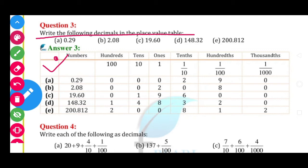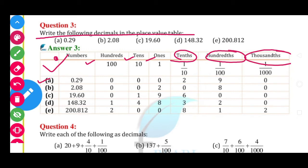Pehle to aapko box banana hai: 100s, 10s, 1s, then 10ths, 100ths, 1000ths — box banana hai aapko pehle. Phir A mein 0.29: 0 ones place mein, point ke peeche wala number 10th place mein hoga — so 2 in 10th place, phir 9 in 100th place. So 0 in ones, 2 in 10th, 9 in 100th — baaki sab mein 0 likhna hai.